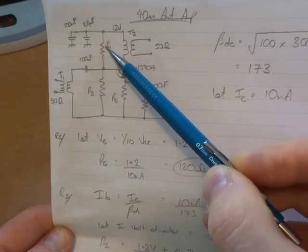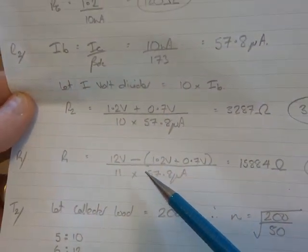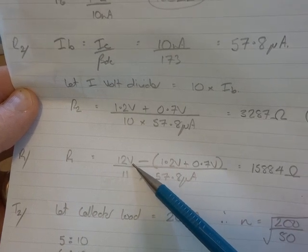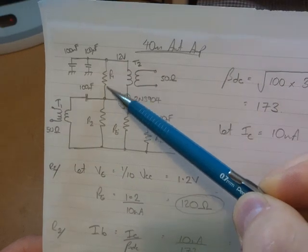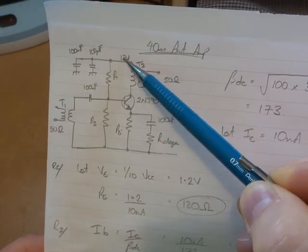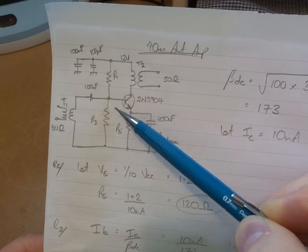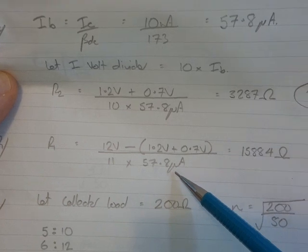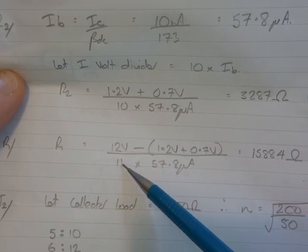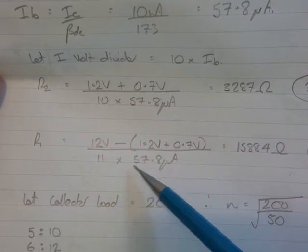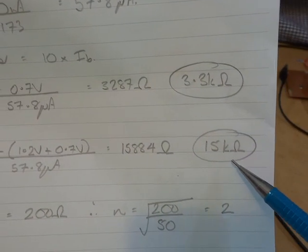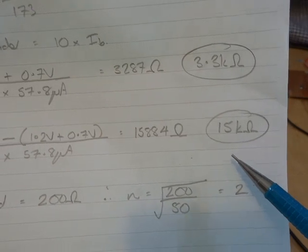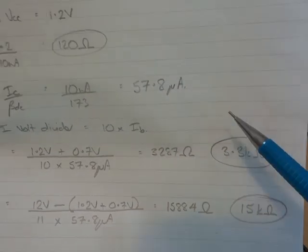R1, that's the upper resistor there. It's going to be the VCC minus the voltage at the base. In other words, we're trying to work out what the voltage is sitting across this. Say again, 12 volts minus this point here, which is 1.2 plus 0.9, divided by 11 times the base current. So the additional 10 plus the additional 1 gives us 11. Comes out at 15884 or 15k ohms as a standard resistor. So that's good. That gives us our three biasing resistors.